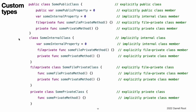Custom types. If you want to specify an explicit access level for a custom type, do so at the point that you define the type. The new type can then be used wherever its access level permits. For example, if you define a file private class, that class can only be used as the type of a property or as a function parameter or return type in the source file in which the file private class is defined. The access control level of a type also affects the default access level of that type's members — its properties, methods, initializers, and subscripts. If you define a type's access level as private or file private, the default access level of its members will also be private or file private.